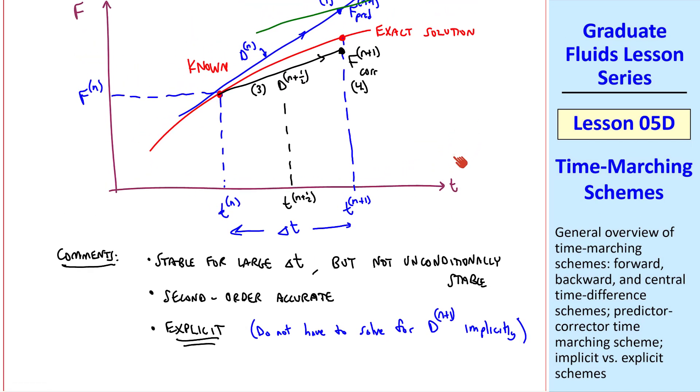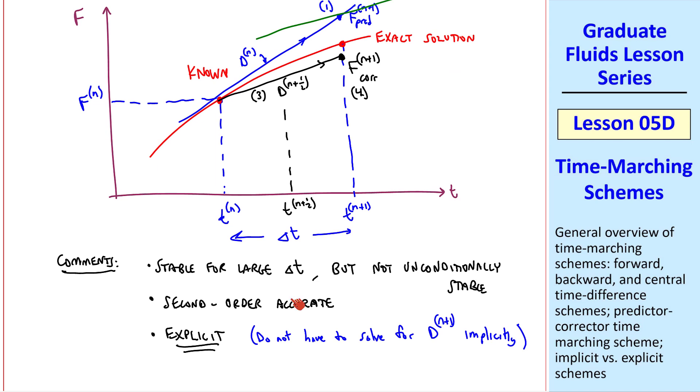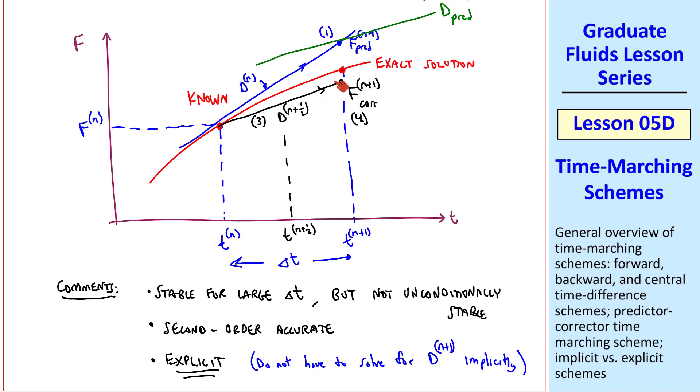Of the four schemes that we've discussed here, this predictor-corrector scheme typically does the best job, but it's not unconditionally stable. In the next lesson, we'll do an analysis similar to this, but we'll do several more slopes in a scheme called the Runge-Kutta technique, which will end up being fourth order accurate.